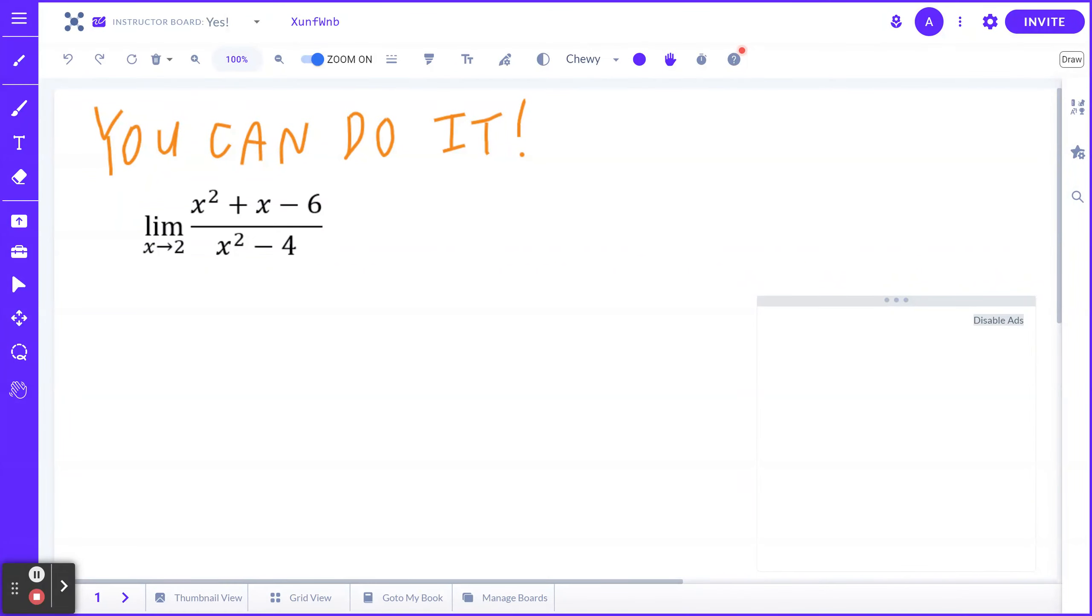Hi everyone, let's take a look at the following limit example. Find the limit of x squared plus x minus 6 divided by x squared minus 4 as x is approaching 2.